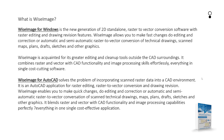Hello there. In this video we will find what is Wise Image. Wise Image for Windows is a 2D standalone raster to vector conversion software with raster editing and drawing revision features. Wise Image allows you to make fast changes, do editing and correction or automatic and semi-automatic raster to vector conversion of technical drawings, scan maps, plans, drafts, sketches and other graphics.